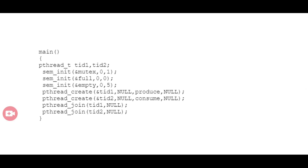In the main function, we initialize the semaphores: mutex is initialized to 1, full is initialized to 0, and empty is initialized to 5. So the initial values are: mutex = 1, full = 0, empty = 5.